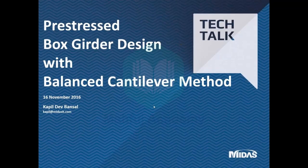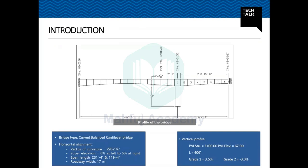Now let's go back to our technical presentation and see what we are actually going to discuss today. We will model a curved balanced cantilever bridge and the bridge will be tapered. The vertical as well as horizontal alignment is mentioned on the slide. We will take this example and see how we can model the various parts of a balanced cantilever bridge in Midas Civil. If you have any questions, you can write them in the questions window.